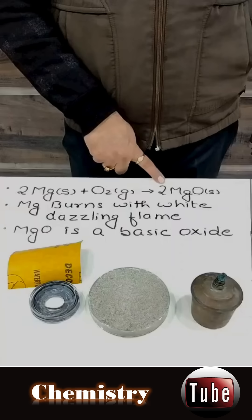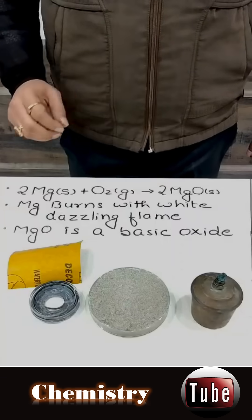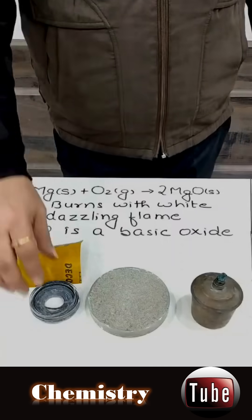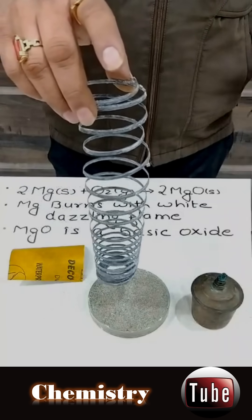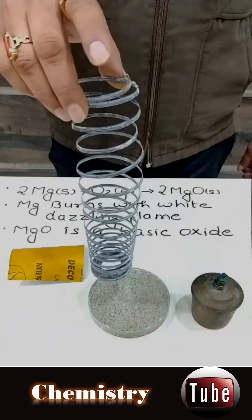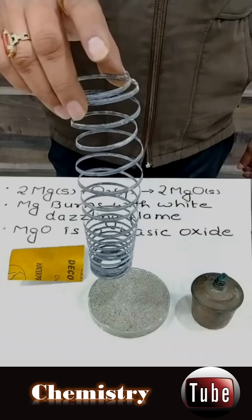Magnesium oxide looks like a white powder and when magnesium burns, it burns with a white dazzling flame. But the issue is that magnesium develops a layer of oxide, magnesium oxide on its surface. This magnesium oxide layer prevents magnesium from burning.